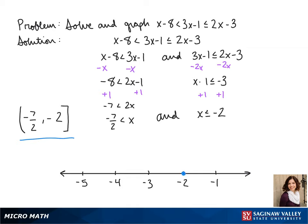To graph this, we put a closed circle on negative 2 and an open circle on negative 7 halves. It's everything between them, so that's where our line goes.